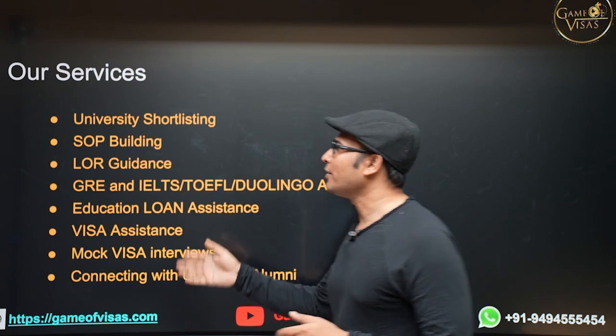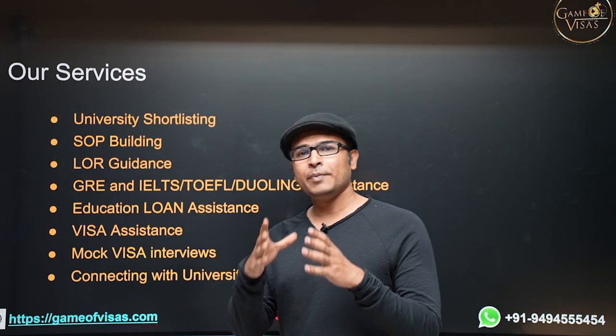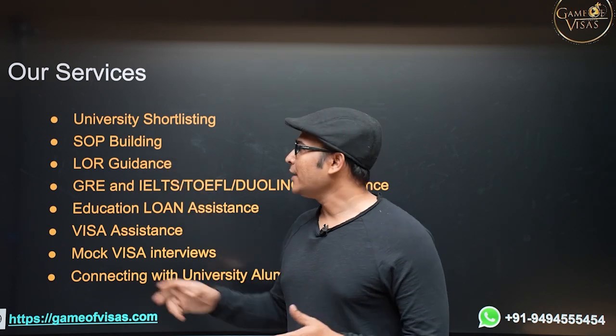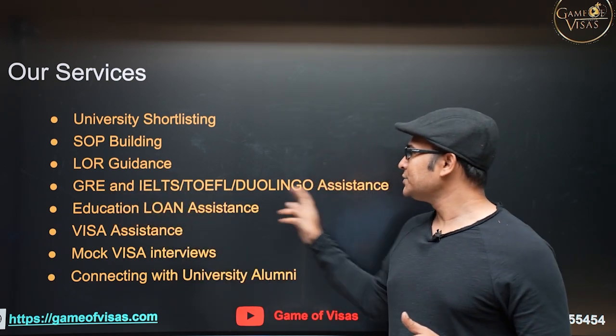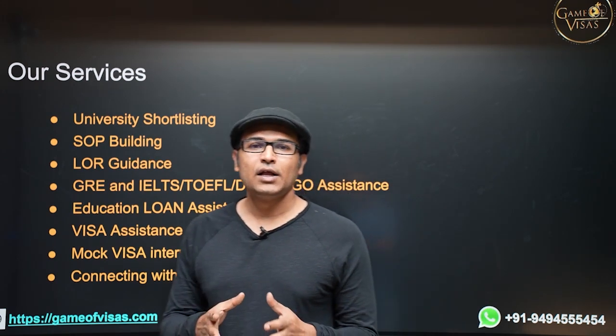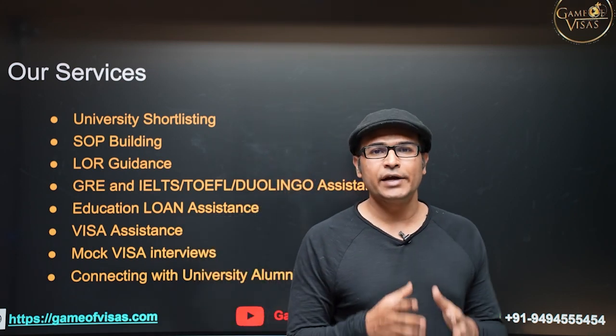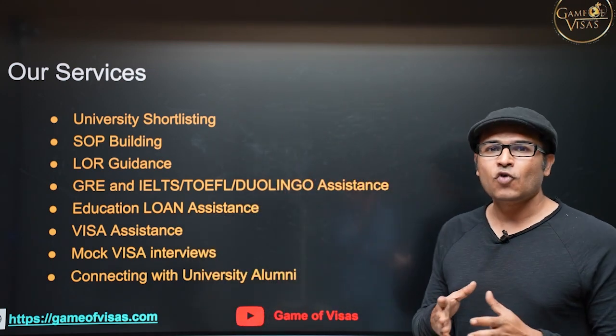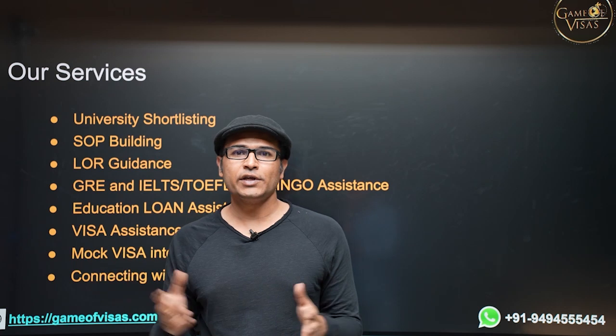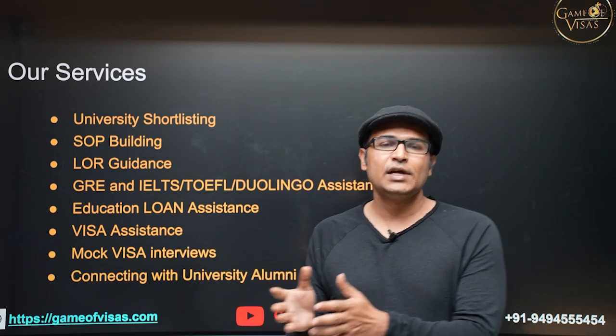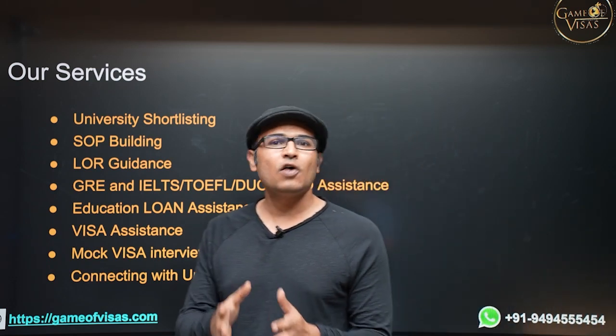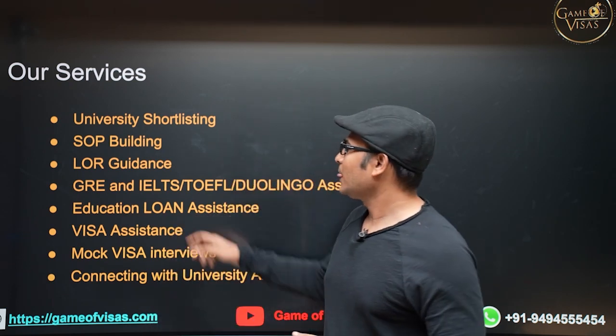And these are all the services that we provide: university shortlisting, so depending on your profile we will shortlist what are the universities that you have to apply, and statement of purpose building, and then LOR guidance, and GRE and English test assistance, and education loan assistance. So you don't have to have any collateral, which means without any security now you can get education loan. Getting education loan is very simple these days. And whatever the amount of fee that you have, you have a range of universities. You can apply for 10 lakh universities, 20 lakh universities or 50 lakh universities, but whatever it is you are going to get complete education loan and you can pay off your education loan in 1 year after you get a job.